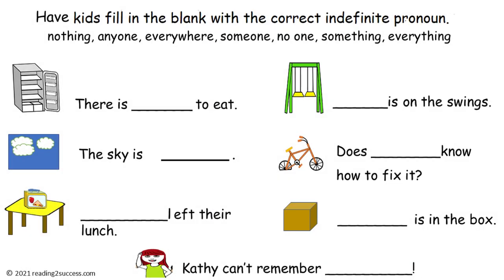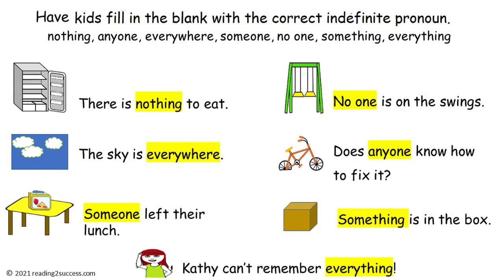Now have kids fill in the blank with the correct indefinite pronoun, choosing from: nothing, anyone, everywhere, someone, no one, something, and everything. The answers are: There is nothing to eat. The sky is everywhere. Someone left their lunch. No one is on the swings. Does anyone know how to fix it? Something is in the box. Kathy can't remember everything.